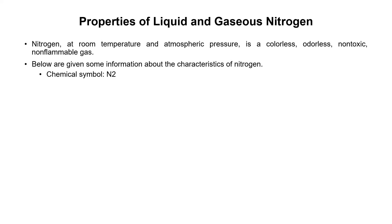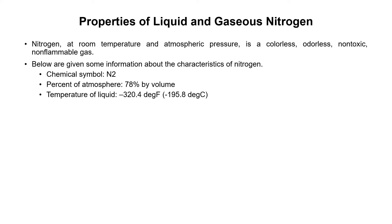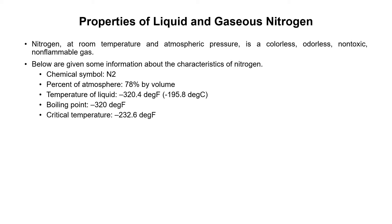The chemical symbol of nitrogen is N2. The percentage of nitrogen in the atmosphere is 78% by volume. The temperature of liquid nitrogen is minus 320.4 degrees Fahrenheit, that is minus 195.8 degrees Celsius. The boiling point is minus 320 degrees Fahrenheit. The critical temperature is minus 232.6 degrees Fahrenheit — this is the maximum temperature at which nitrogen can exist as a liquid. If the temperature is above minus 232.6, nitrogen will not be able to exist in liquid state, irrespective of the pressure applied.